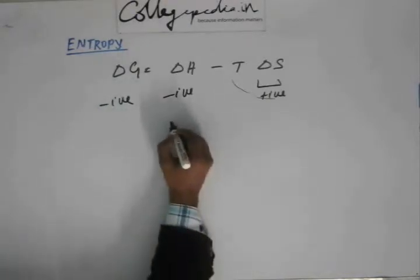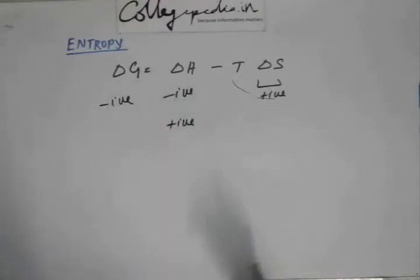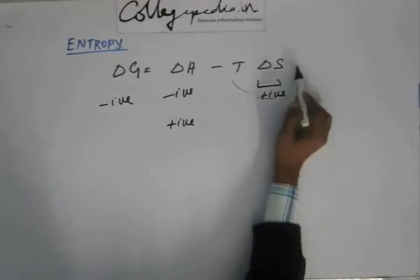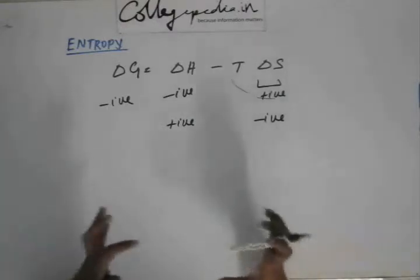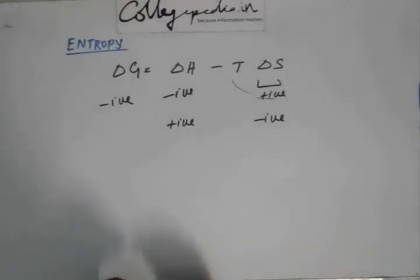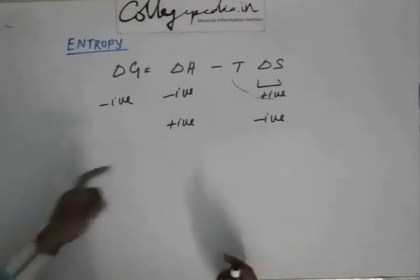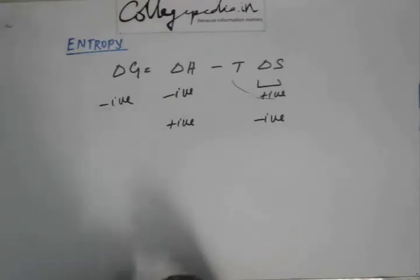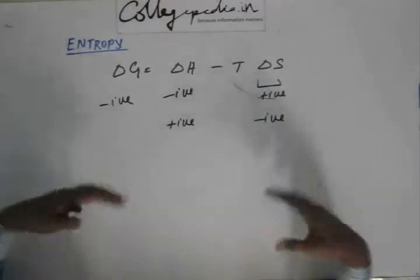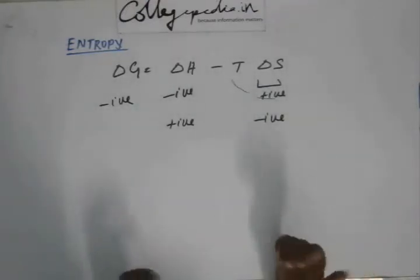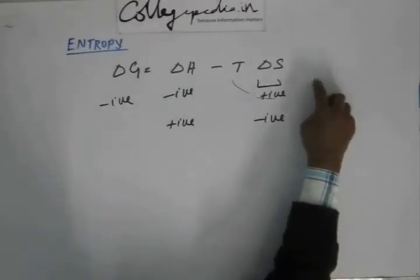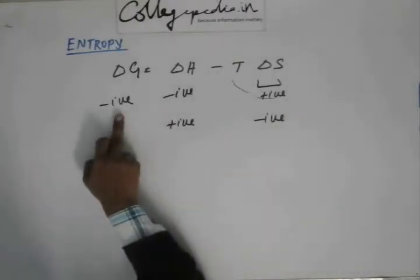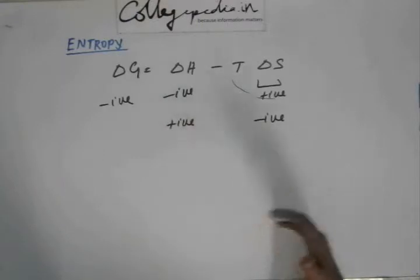Now suppose you have delta H as positive — that means heat is required for the reaction to occur — and delta S is negative, meaning energy is being concentrated and not dispersed out. In this case, energy is being concentrated and you also have to give heat to the system. Both factors are unfavorable, so delta G is always negative — meaning this kind of reaction will always be spontaneous.